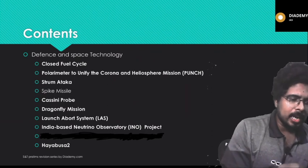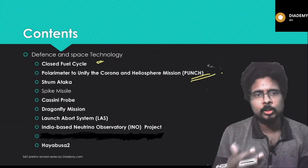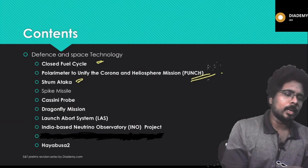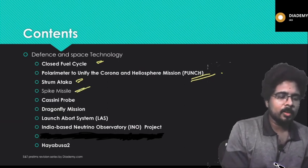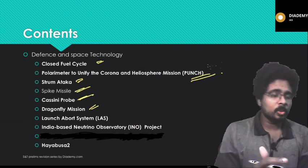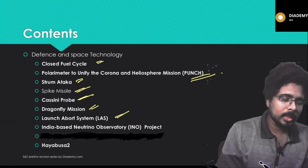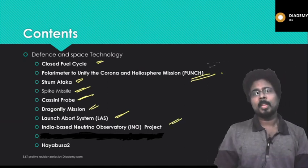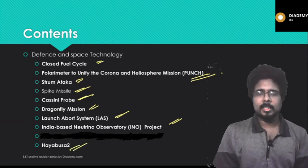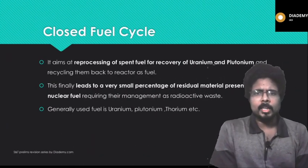Today's content: first we will start with closed fuel cycle, then we will see the PUNCH mission, after that Stum Attack, the Spike missile, the Cassini probe, the Dragonfly mission, the Launch Abort System, the India-Based Neutrino Observatory — where it is going to be set up — and finally Hayabusa 2.